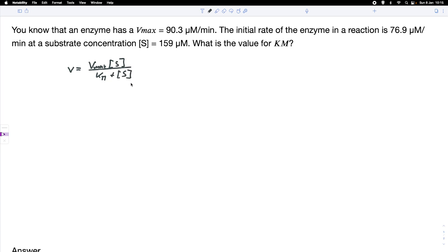And we just do a little bit of rearranging. We bring the denominator to the other side and we end up with V times Km plus the substrate concentration equals Vmax times the substrate concentration.